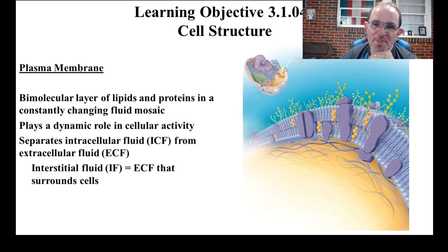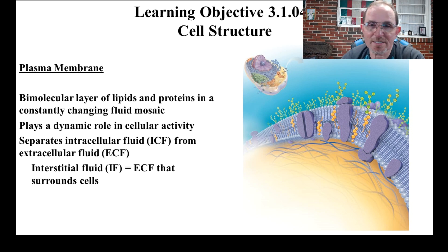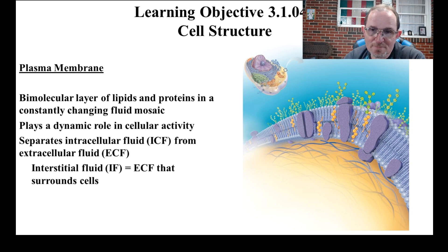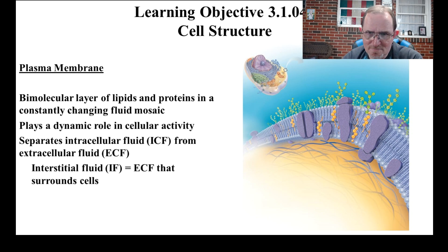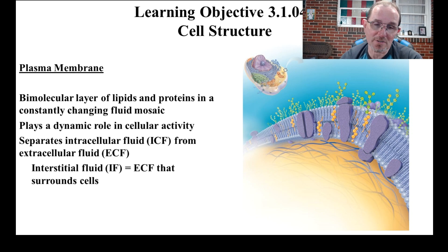So the plasma membrane — here you can see the phospholipids. They've got some things stuck in there. We usually call this a phospholipid bilayer because you have two layers, with one set of phospholipid heads facing the outside and one facing the inside of the cell. This thing has a lot to do with keeping things in and out of the cells.